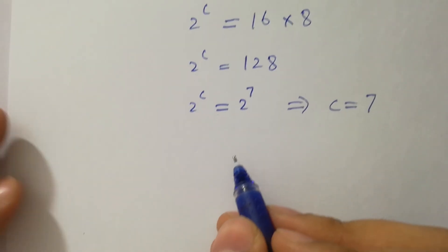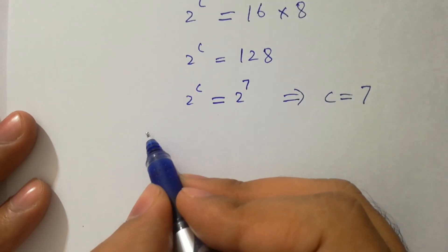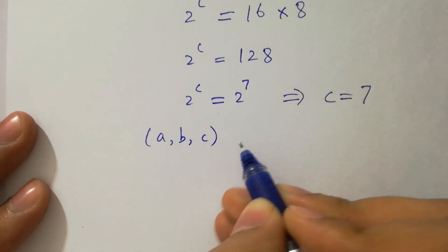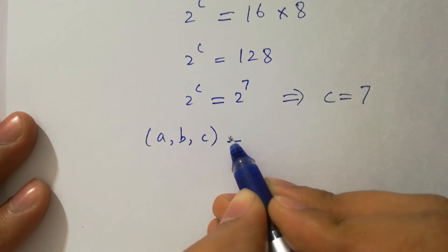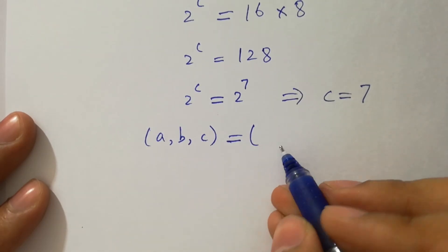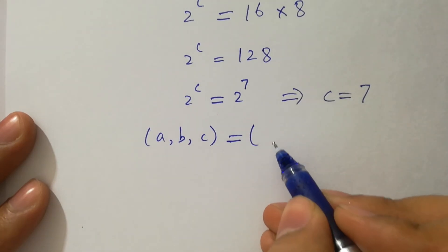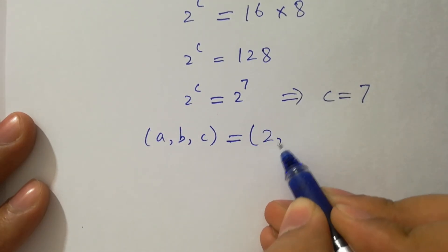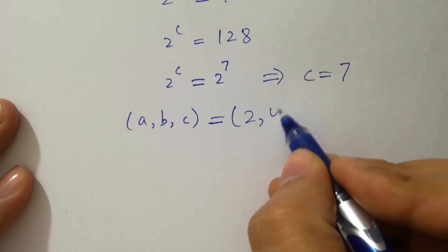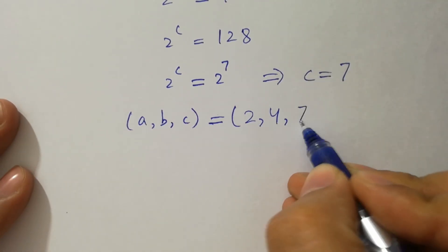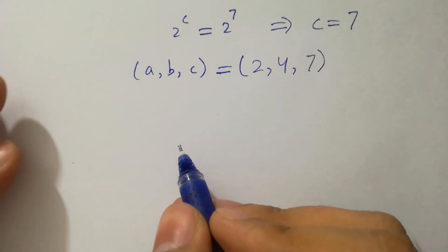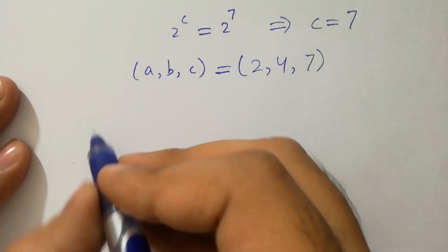So we have the values of a, b and c which are: a is equal to 2, b is 4, and c is 7. In the next step I am going to verify.